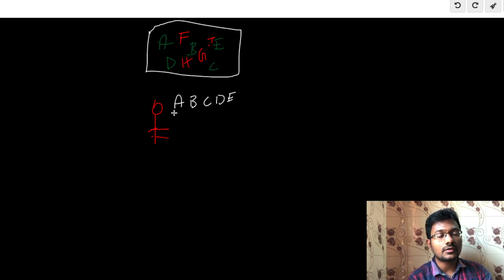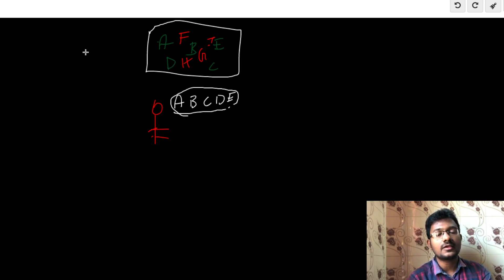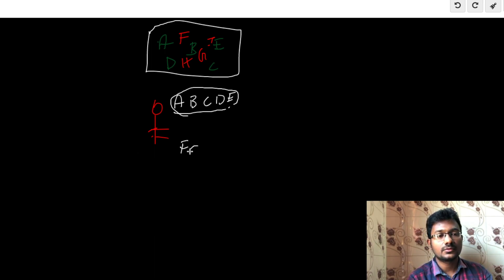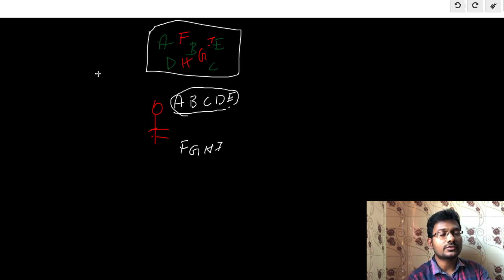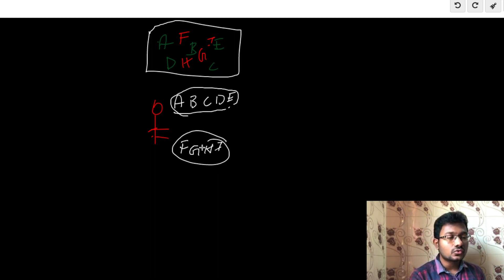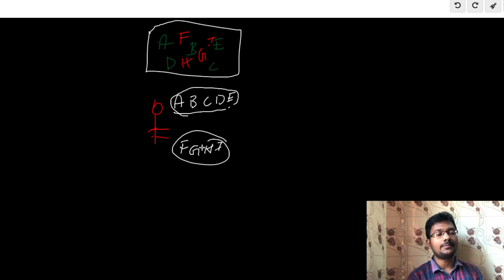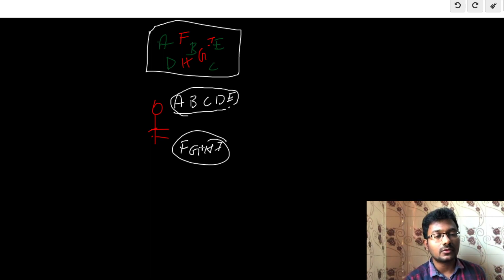So A, B, C, D are important people — if they call you, you talk with them in detail and discuss many things. But if F, G, H, or I call, you reply with only one thing: 'I'm not interested.' That default response is handled using the Null Object Design Pattern. We will implement this example practically using Java in the next video, so please stay tuned to this series.